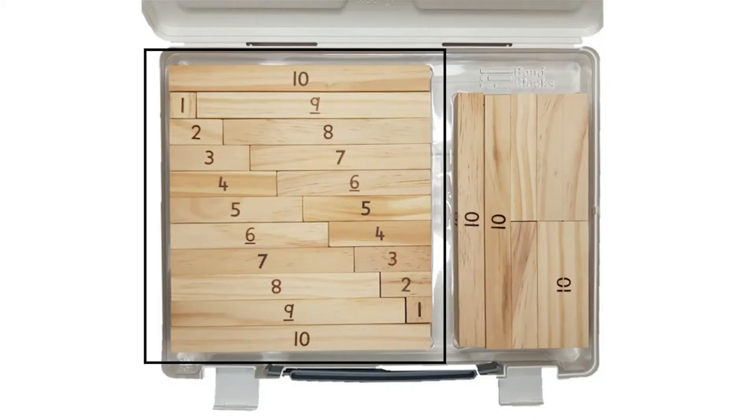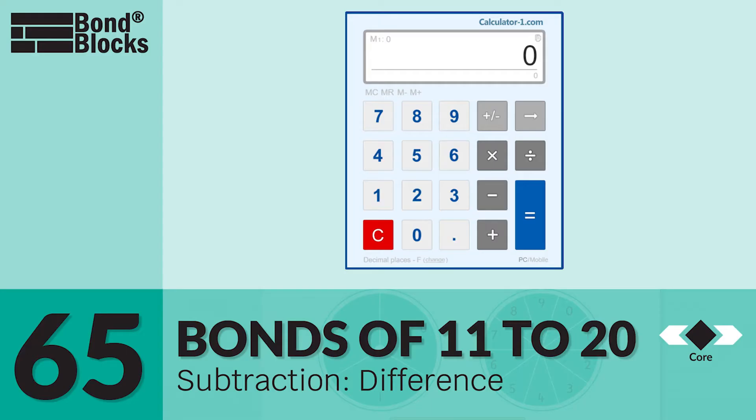To complete this activity you need two of each bond block from one to ten and a calculator so you can check your partner.